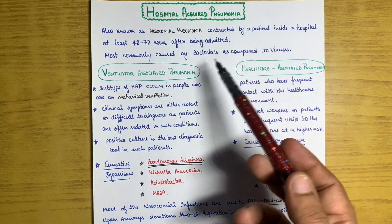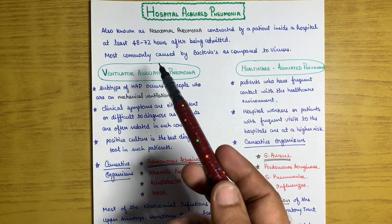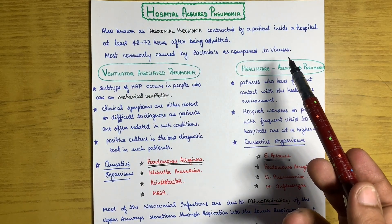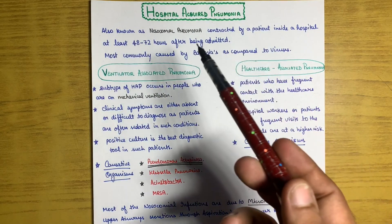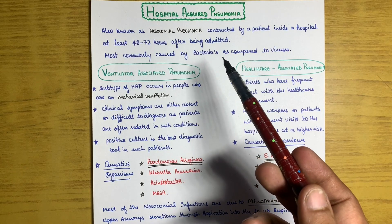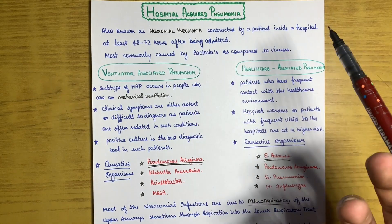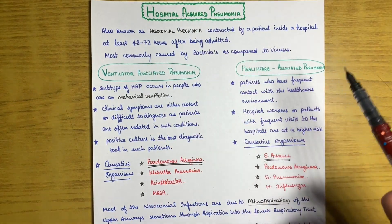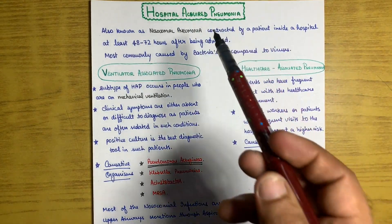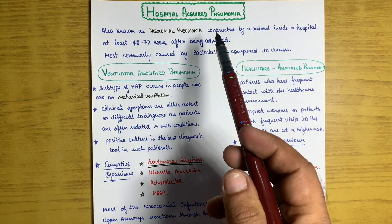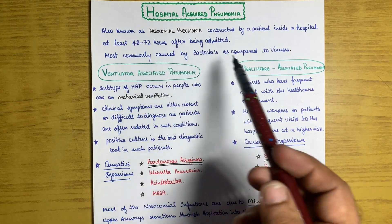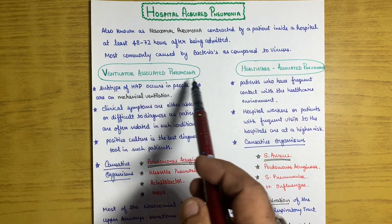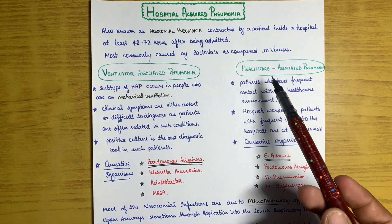Hospital-acquired pneumonia is most commonly caused by bacteria as compared to viruses — bacteria are the most common perpetrators. Hospital-acquired pneumonia is further subdivided into two types: one is ventilator-associated pneumonia, and the other is healthcare-associated pneumonia.